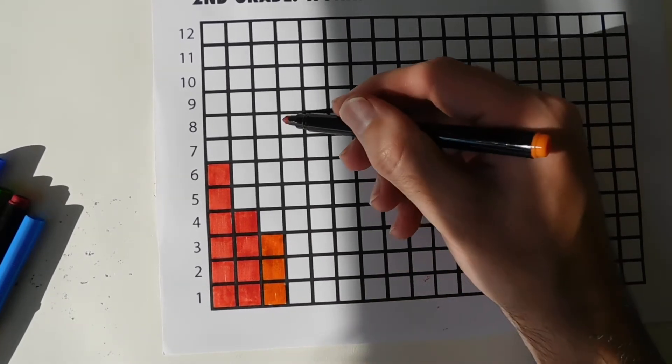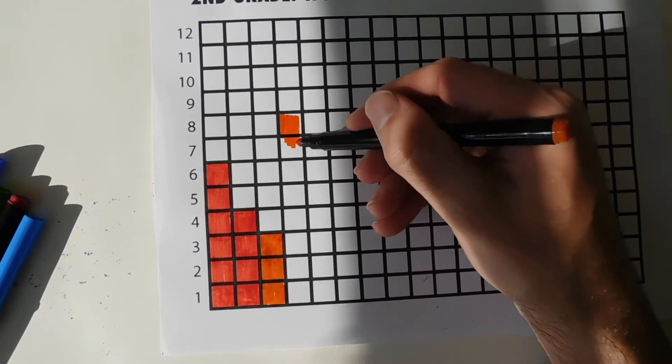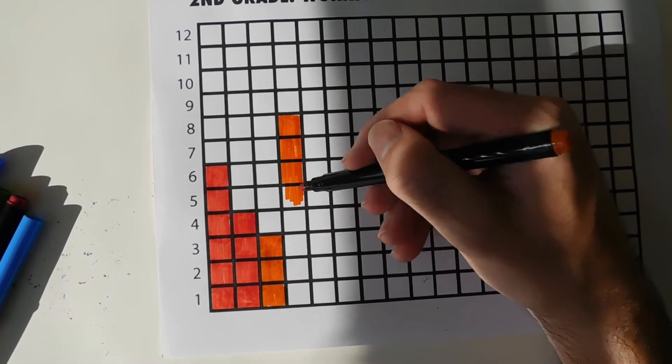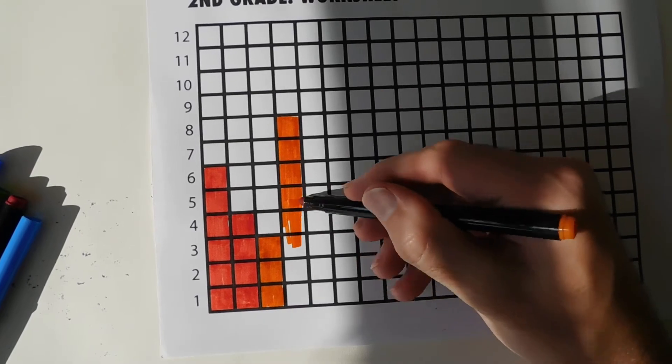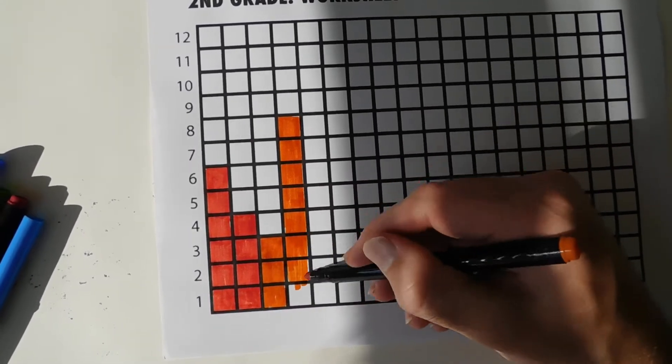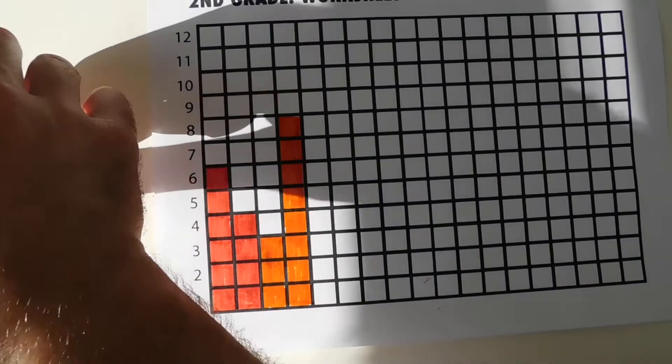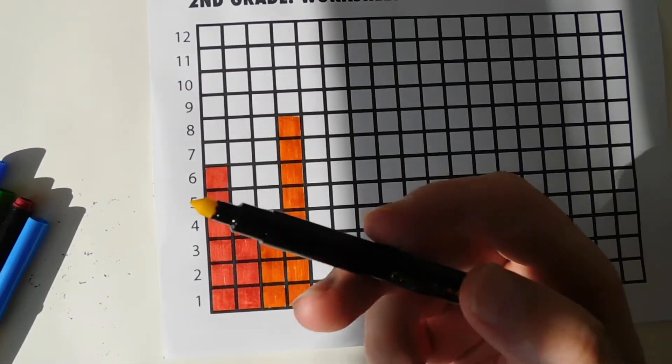Next one, let's do 8, let's make it really tall. So red, orange. Next color is yellow.